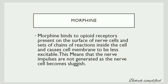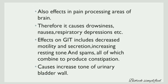Now let us discuss another phytochemical — morphine. Morphine binds to opioid receptors, which are present on the surface of nerve cells. When morphine binds to the receptor on a nerve cell, a chain of reactions occurs inside the cell, causing the cell membrane to become less excited. This means nerve impulses are not generated as the nerve cell becomes sluggish. Morphine also affects pain processing areas of the brain, causing drowsiness, nausea and respiratory depression.